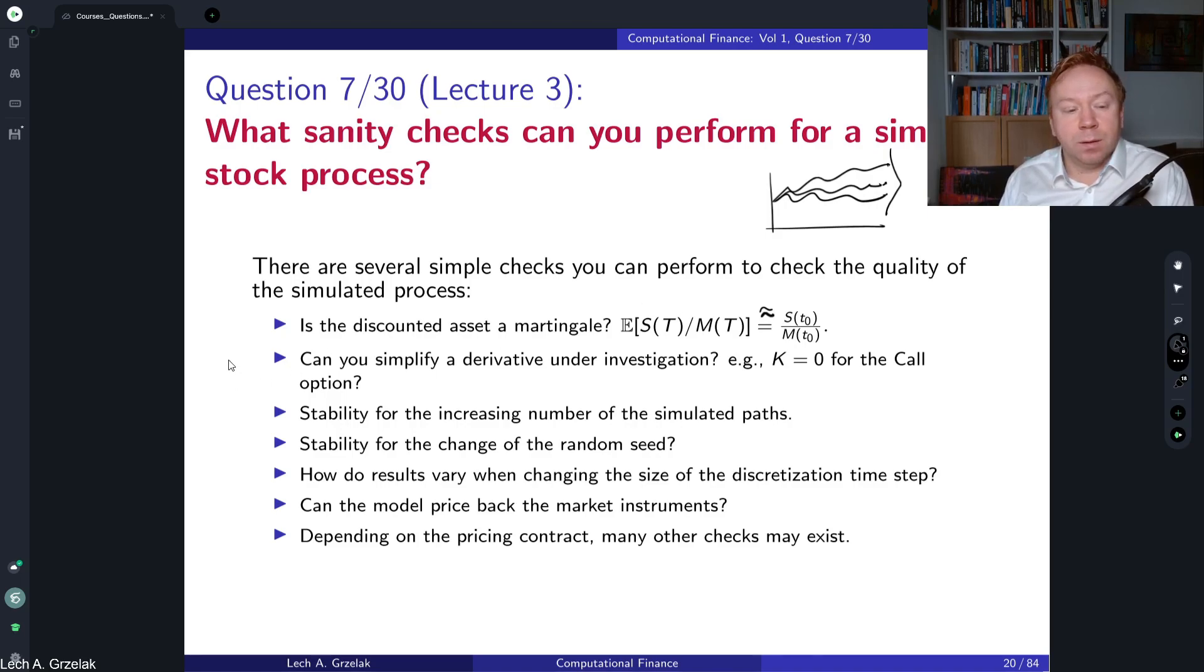Another aspect that you can think of, especially if we talk about derivative pricing, is whether your derivative can be simplified. So for example, if I have a call option and I choose strike equal to zero, then essentially I'll end up with problem number one. So this point is about checking whether your payoff is properly implemented. So we have already two points.